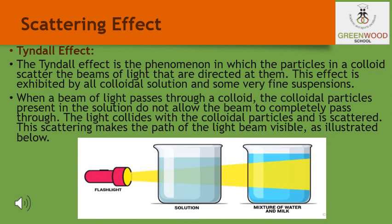This phenomenon is seen when a fine beam of sunlight enters a smoke-filled room through a small hole — scattering of light makes the particles visible. The Tyndall effect can also be observed when sunlight passes through the canopy of a dense forest, where tiny water droplets in the mist scatter the light. The color of the scattered light depends on the size of the scattering particles. Very fine particles scatter mainly the blue color, while particles of larger size scatter light of longer wavelengths. If the size of the scattering particles is large enough, the scattered light may even appear white.